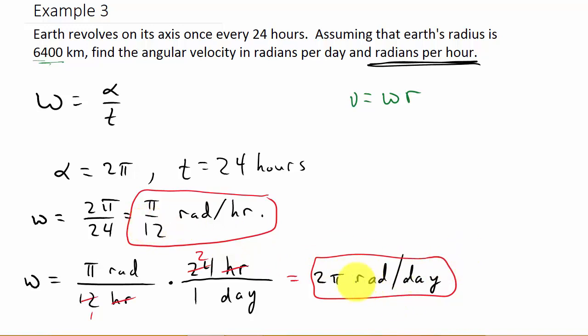We'll do it again with radians per day. But radians per hour, so that's going to give me the linear velocity would be pi over 12, that's the angular velocity, times the radius 6,400 kilometers.